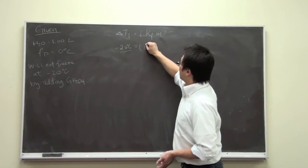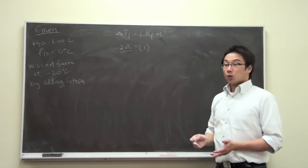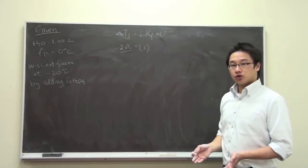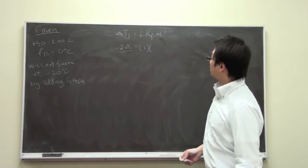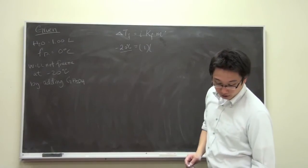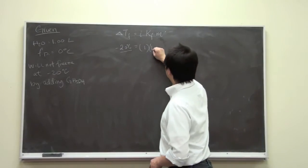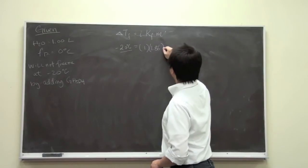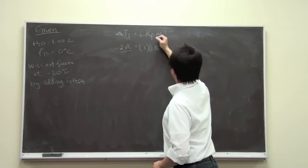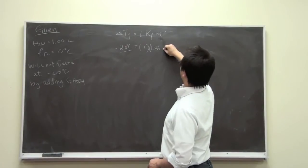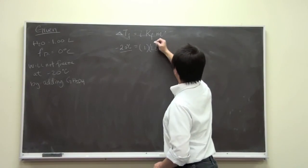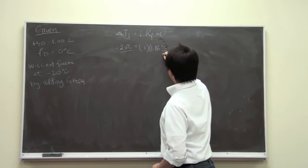And for ethanol the van't Hoff factor is one because it does not dissociate. And the freezing point depression constant for water is 1.86. Let me write down the units. So it is going to be degrees Celsius per molality.